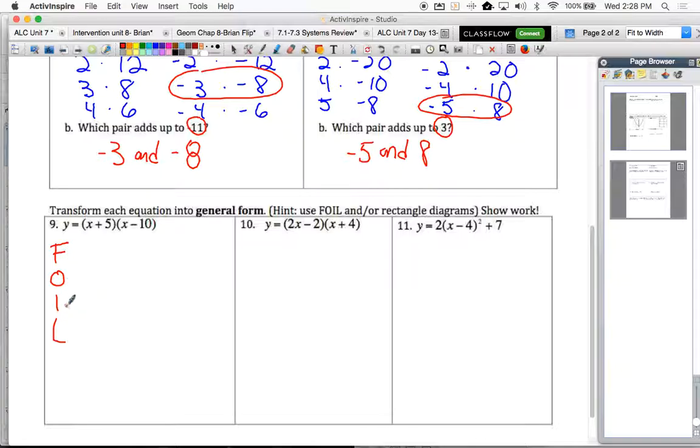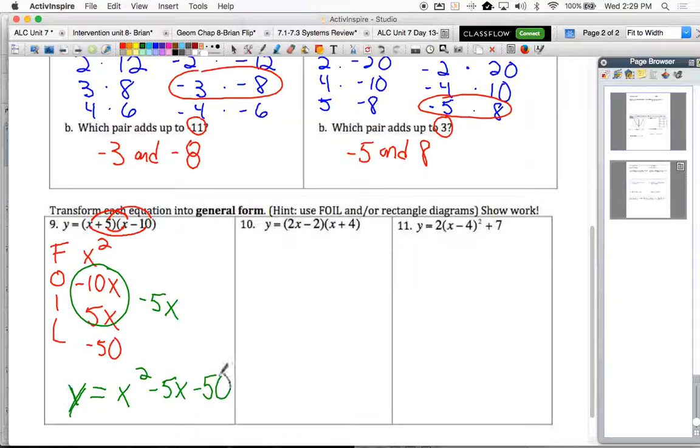Remember, FOIL stands for first, outside, inside, last. So we use that as an acronym to help us remember basically how to multiply x plus 5 times x minus 10 by using some distributive property. But there's four combinations. FOIL helps us remember what to multiply. So first off, first times first would be x squared. The outside terms would be the first and the last, so negative 10x. The inside terms would be 5 times x, so positive 5x. And the last terms would be last times last, so 5 times negative 10 would be negative 50. Recall then we combine like terms. These two combine. Negative 10x plus 5x would be a negative 5x. So our equation in general form would be y equals x squared minus 5x minus 50.